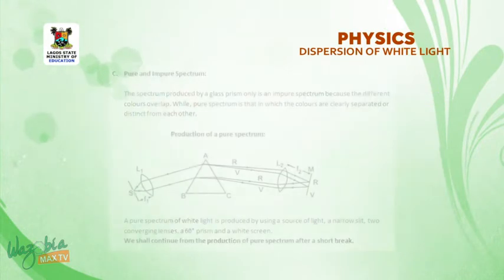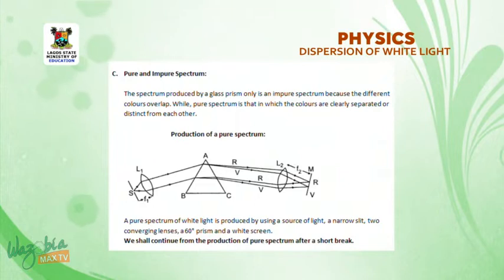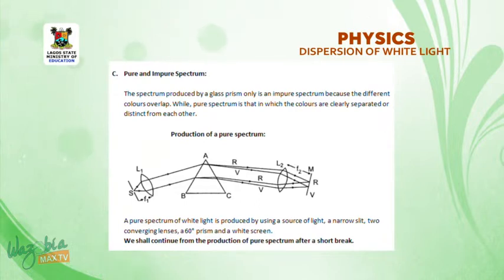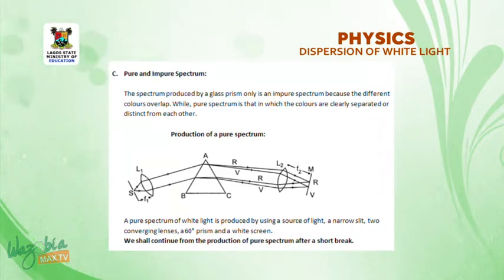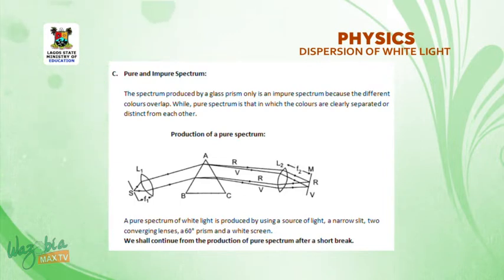Now, pure and impure spectrum. What would differentiate between pure and impure spectrum? The spectrum produced by a glass prism only is an impure spectrum because the different colors overlap, while a pure spectrum is that in which the colors are clearly separated or distinct from each other.